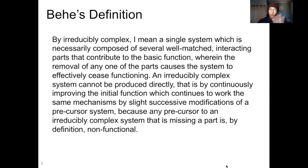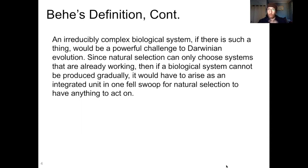He goes on — there's no gap in the text between these two parts, I just can't fit them all in one slide. He continues: "An irreducibly complex biological system, if there is such a thing, would be a powerful challenge to Darwinian evolution. Since natural selection can only choose systems that are already working, then if a biological system cannot be produced gradually, it would have to arise as an integrated unit in one fell swoop for natural selection to have anything to act on."